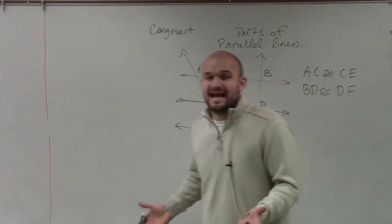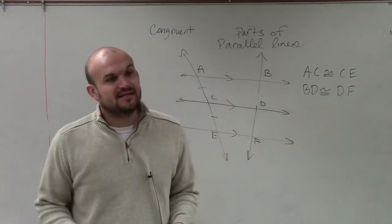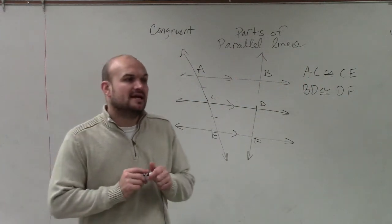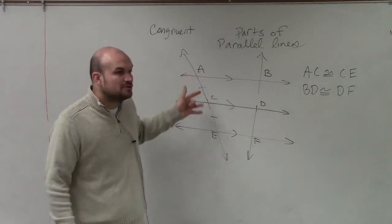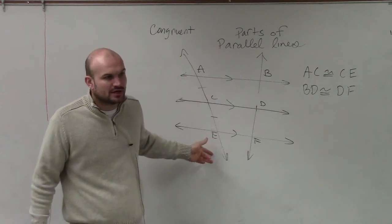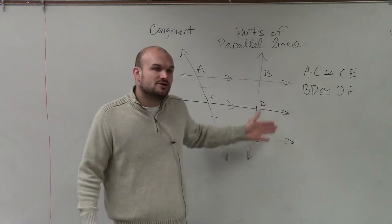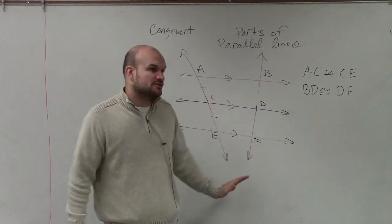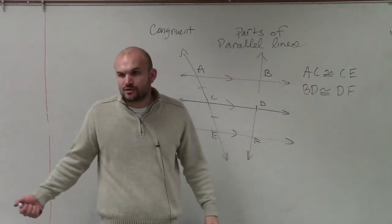It might seem like it's pretty obvious, but it's something that's very important for you guys to understand. If you have three sets of parallel lines and you have two sides that are congruent to each other, then you can show that the other two, where it crosses another transversal, are also going to be congruent to each other.